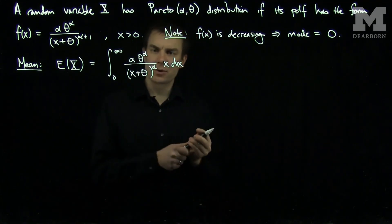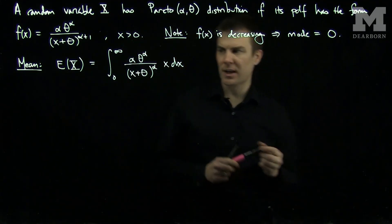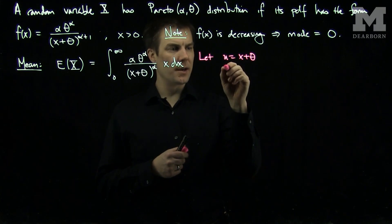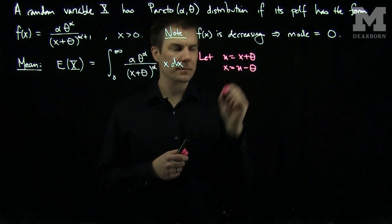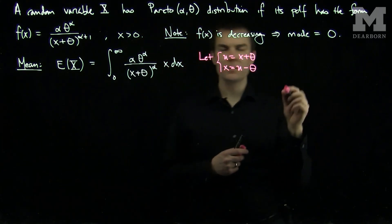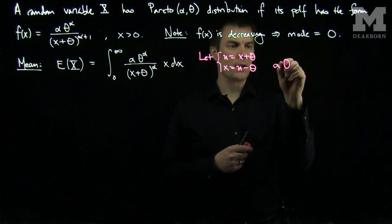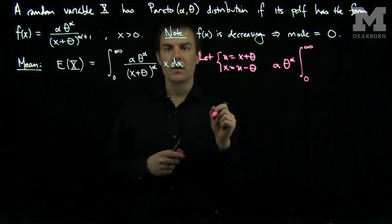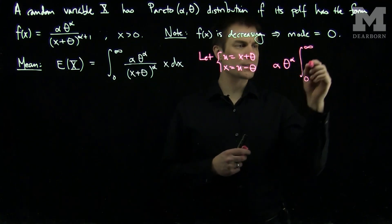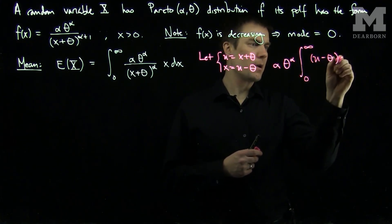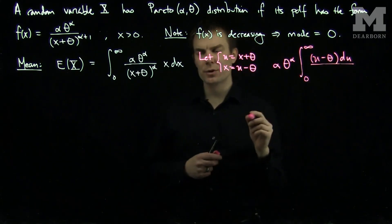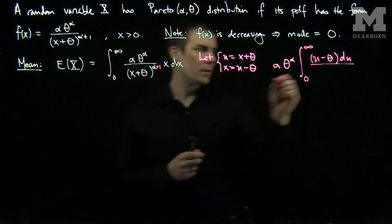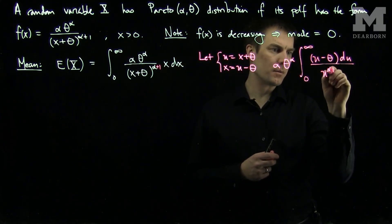Now what we'll do is make a substitution in this integral. Let u be x plus theta. Then x is u minus theta. With this substitution, our integral becomes alpha theta to the alpha — those are constants — times the integral from 0 to infinity of (u minus theta) du over u to the alpha plus 1.